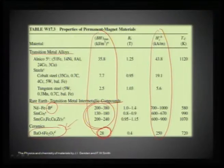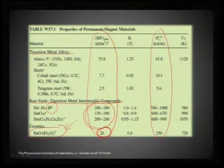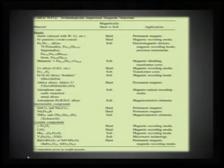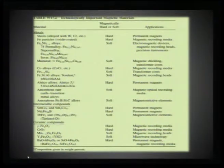Barium hexaferrite is used not only as a permanent magnet but also in thin film recording media. Intermetallics generally have a larger energy product compared to alloys, and we also see substantial contribution from ferrite ceramic compounds. When looking at permanent magnet applications, the energy product is the key parameter.